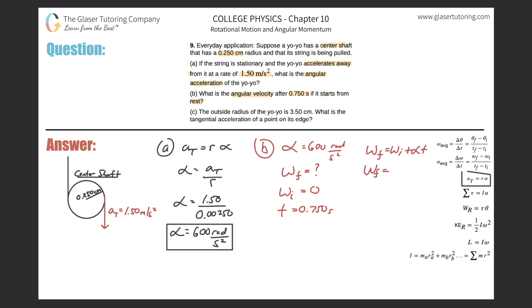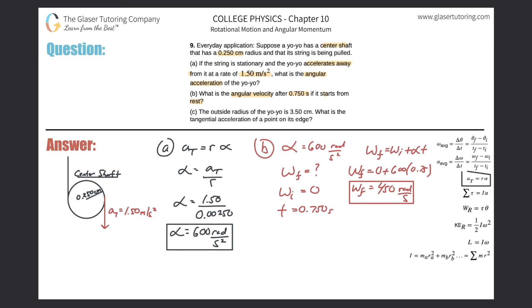Plugging in the values: initial angular velocity is zero, angular acceleration is 600 rad/s², and time is 0.75 seconds. So 600 times 0.75 gives us 450. The final angular velocity is 450 radians per second.